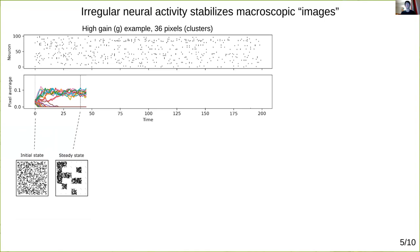Thus, although the single neuron activity is irregular, the macroscopic network activity relaxes to an apparent attractor.